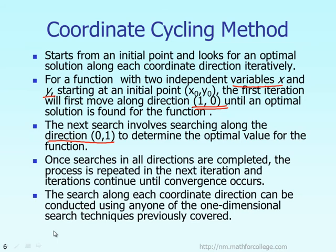After obtaining the optimum solution for the first variable, you then find the optimum solution for the second variable — working in direction (0, 1). When you finish both variables, direction (1, 0) for the first and direction (0, 1) for the second, we say we complete one iteration. Then you repeat again and again until the final optimum solution is obtained.